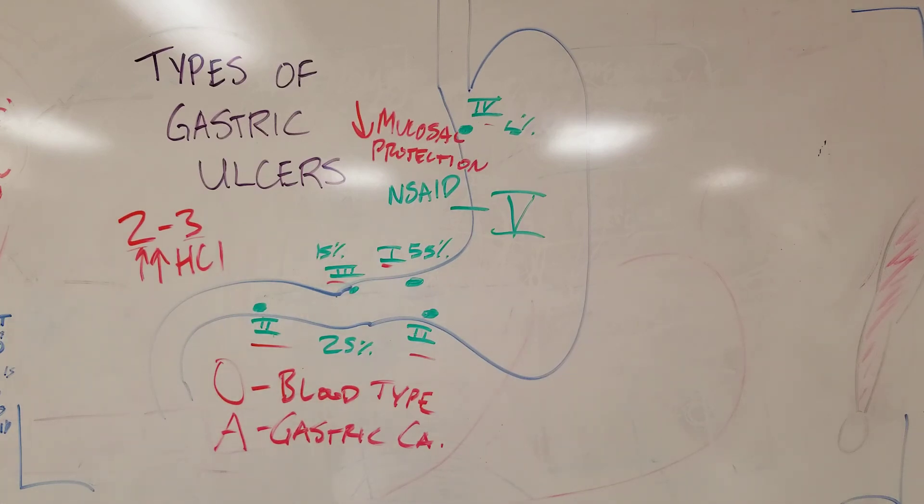And there you have the types of gastric ulcers, the relative prevalences, the locations, and whether they're associated with decreased mucosal protection, increased acid or NSAID use. Thanks for watching.